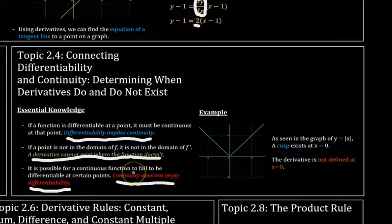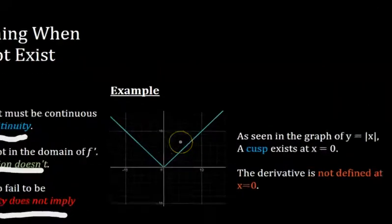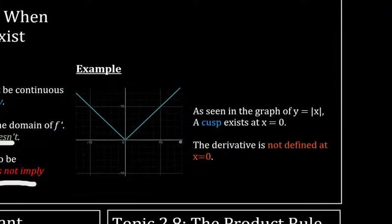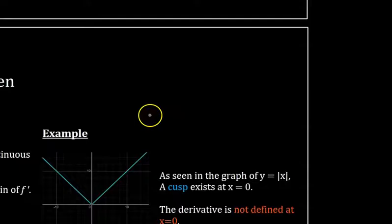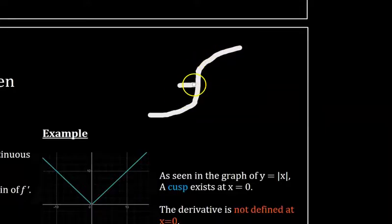And there are two main types of points where you have a continuous function that's not differentiable. So first of all on this graph you have the absolute value function and at zero there's like this sharp changing point that's called a cusp and so the derivative is not defined right here.